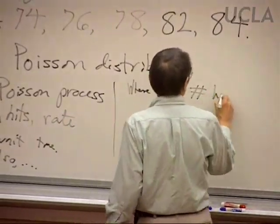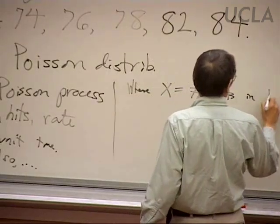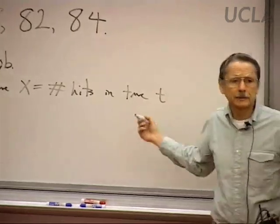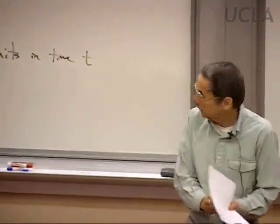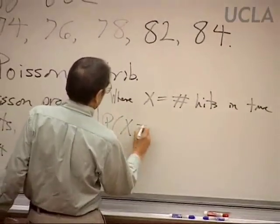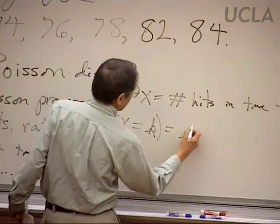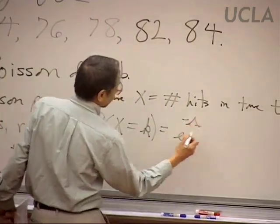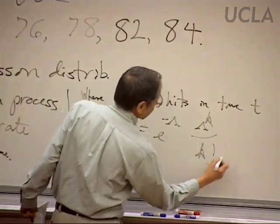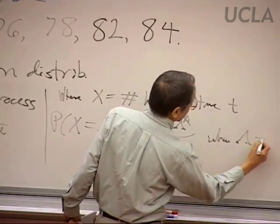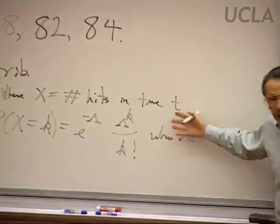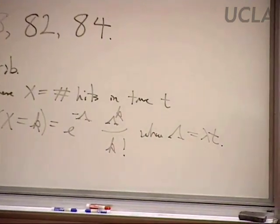If we want to count the number of hits in time t — the simplest case is perhaps where t equals 1 — the probability of getting k hits in time t is e to the minus lambda, lambda to the k over k factorial, where capital lambda is little lambda times t. We said these things last time.